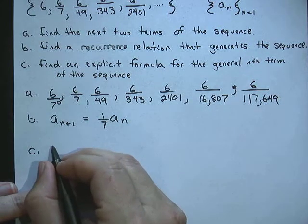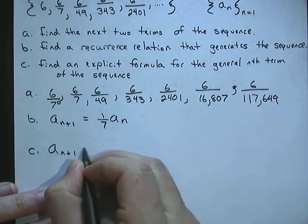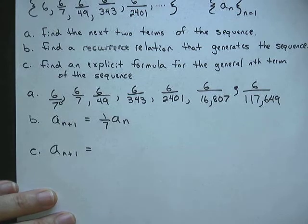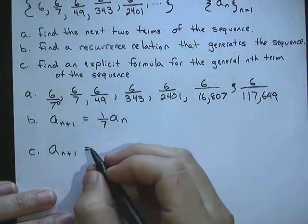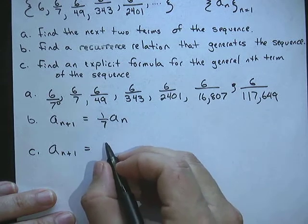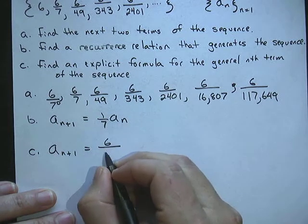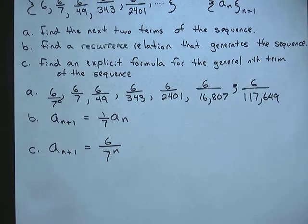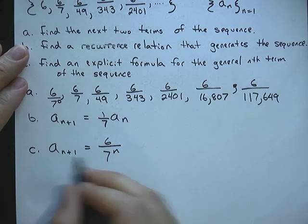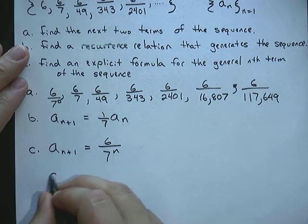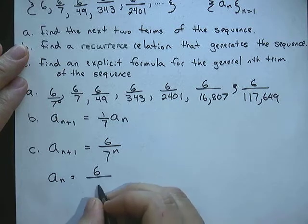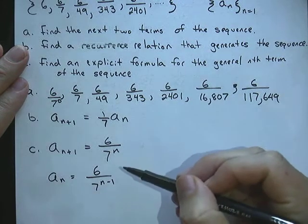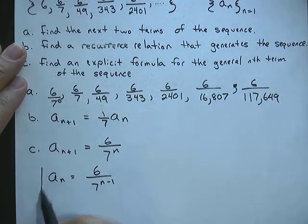So a sub n plus 1 is equal to 6 over 7 to the n. So that's a possible one. But we really need a sub n. So if I subtract 1 from here and 1 from here, then my a sub n is going to be equal to 6 over 7 to the n minus 1 term. So both of these are technically correct, but this is the one they're going to want because it starts with n.